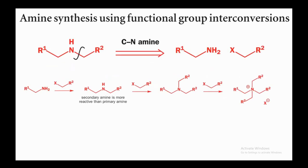Now, synthesis of a secondary amine using FGI. Directly disconnecting the C–N amine bond is not reliable because of overalkylation: nitrogen has two hydrogens and is nucleophilic, so it can attack alkyl halide to give a dialkylated amine, then trialkylated, then tetraalkylated (quaternary ammonium). This is the problem with direct amine disconnection — avoid this strategy for amine synthesis because you may end up with more alkylated products than desired.